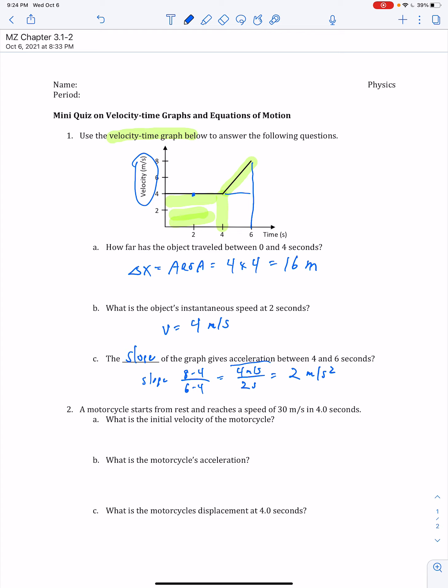Okay, so next problem. We have a motorcycle starting from rest, reaching a speed of 30 meters per second in 4 seconds. So we're asking you for a couple of things here. First, we want to know what is the initial velocity? Seeing that starting from rest, that's one of our givens, the initial velocity is equal to 0 meters per second.